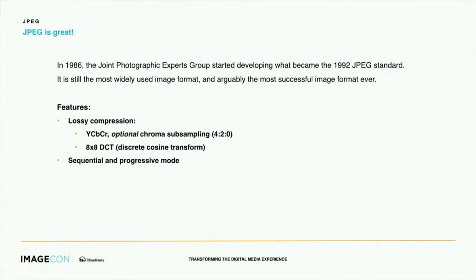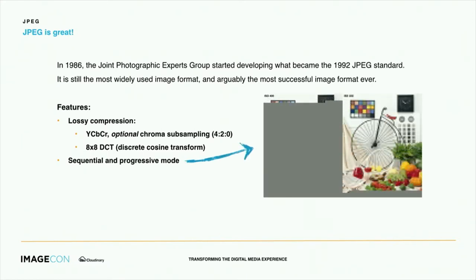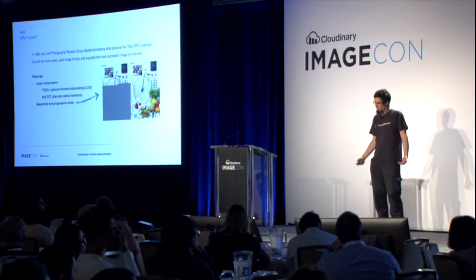JPEG is a great format. It was development started in the second part of the 80s, and it was eventually standardized in 1992. It's still the image format on the web and everywhere else, basically. It features lossy compression with optional chroma subsampling. It uses a DCT, and it has sequential and progressive options, so you can get previews of an image before you have downloaded the whole thing.